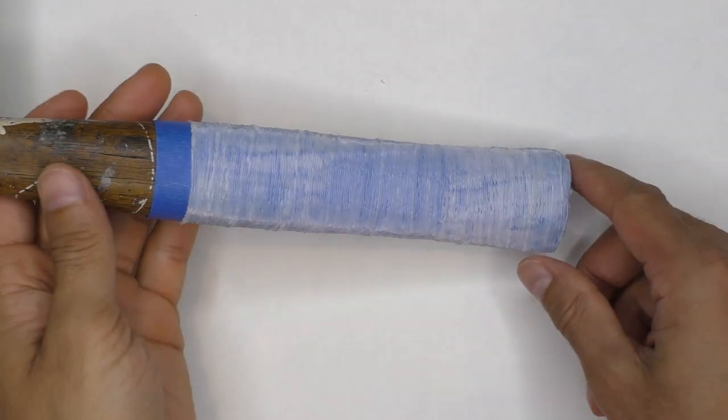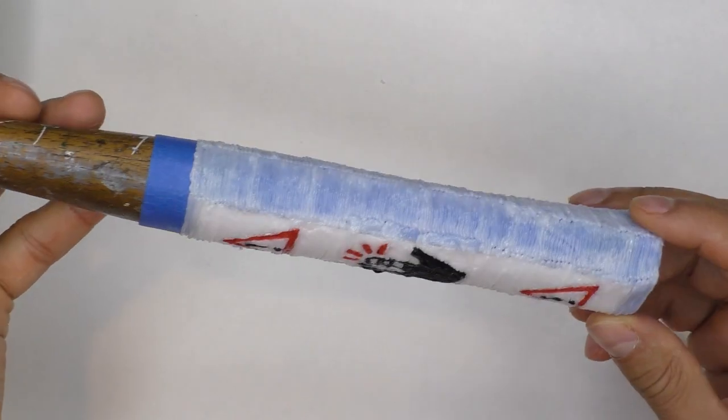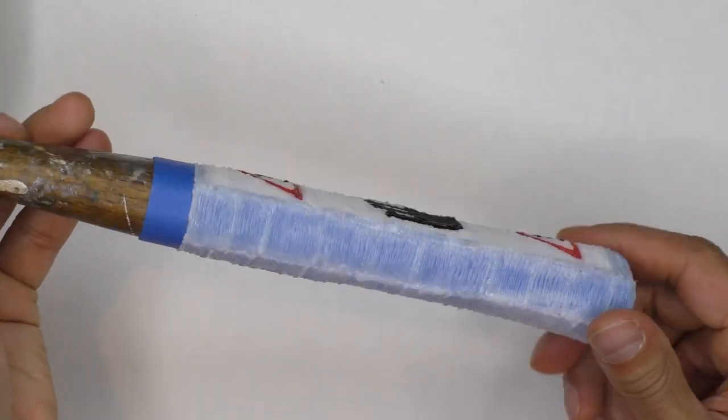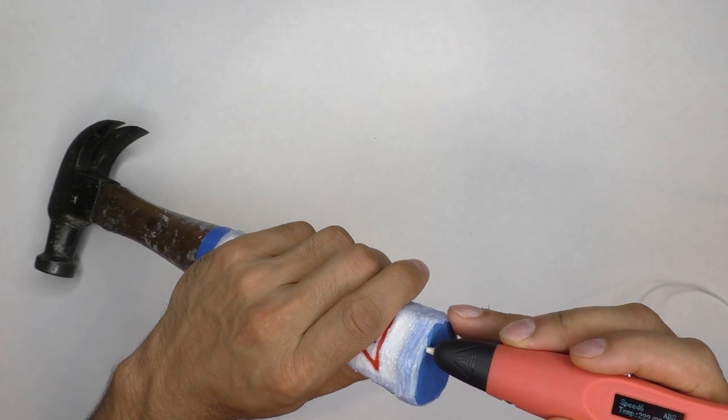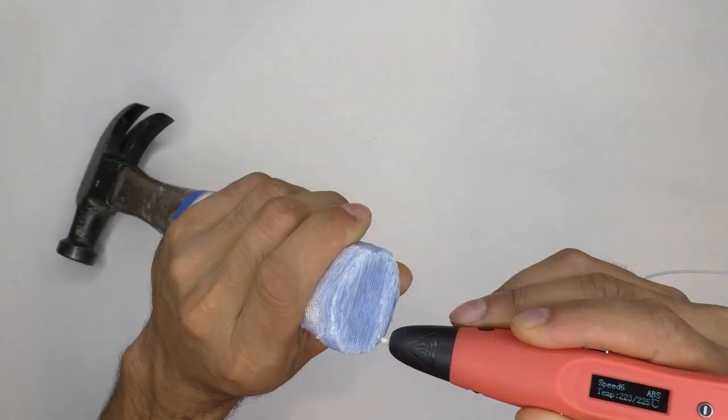Honestly, I had intended to only do one layer, but I noticed that the blue painters tape bled through the white filament pretty badly. Getting video of this part was much harder than it looks.